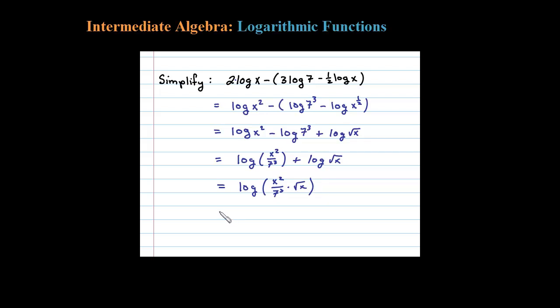Okay so let's clean this up a little bit. That would be equivalent to log of x squared times the square root of x all over 7 to the third which is 343. So that's what you might see in the back of the book.